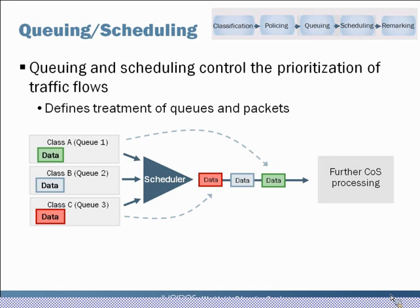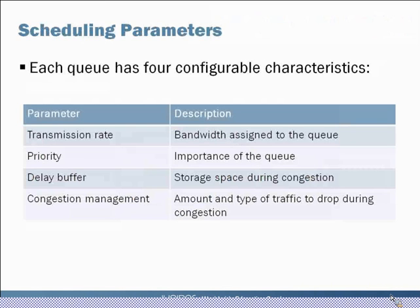In our diagram we have a simple example — three forwarding classes or queues in our device. At this point they get passed into the scheduler, and based on the parameters of the schedulers and the way they have been configured, the data gets prioritized or dropped if necessary and sent out onto the wire in some prioritized fashion.